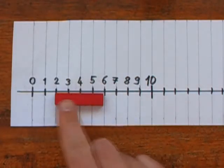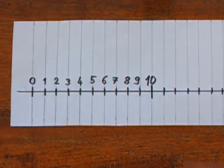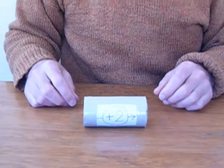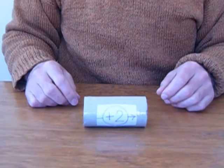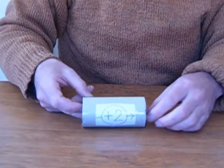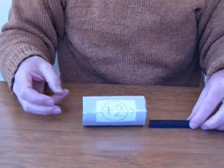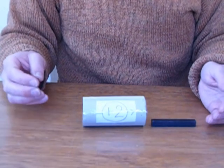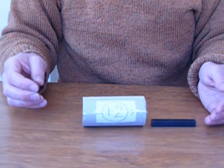We can also use rods with arrows. Then the direction of the journey is defined. We can do the same thing with the machines. Here we have again our plus two machine.